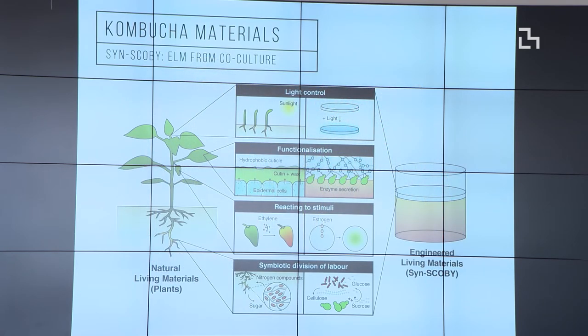We were looking at different kinds of naturally occurring living materials. The most obvious example is plants. You see they can respond to light. They can have different functionalization on different surfaces on a tree, leaves. And they can react into stimuli, like chemicals or molecules in the gas. And also they have this symbiotic division of labor.